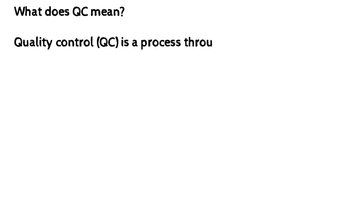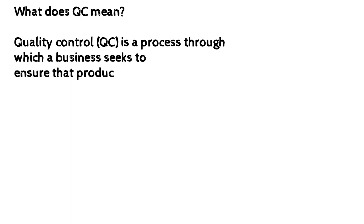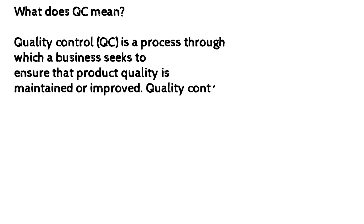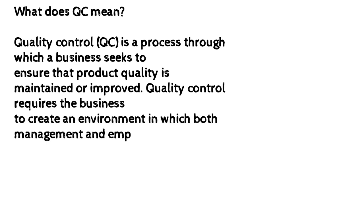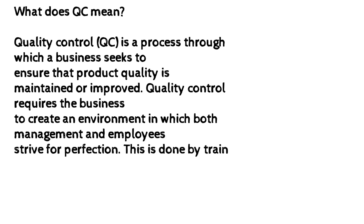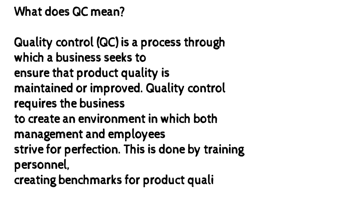What does QC mean? Quality control (QC) is a process through which a business seeks to ensure that product quality is maintained or improved. Quality control requires the business to create an environment in which both management and employees strive for perfection. This is done by training personnel, creating benchmarks for product quality, and testing products to check for statistically significant variations.